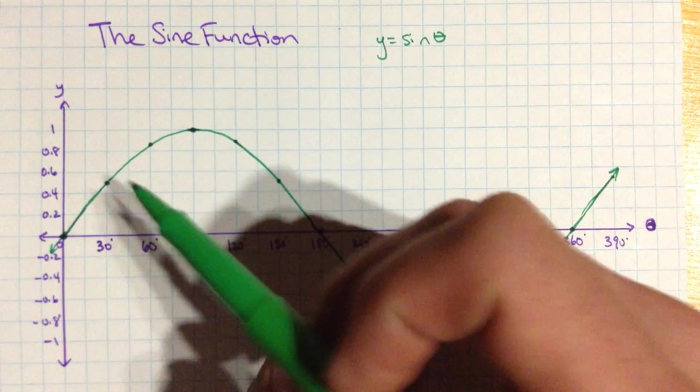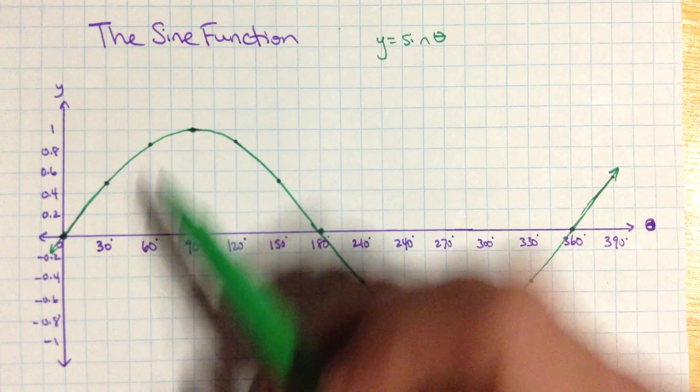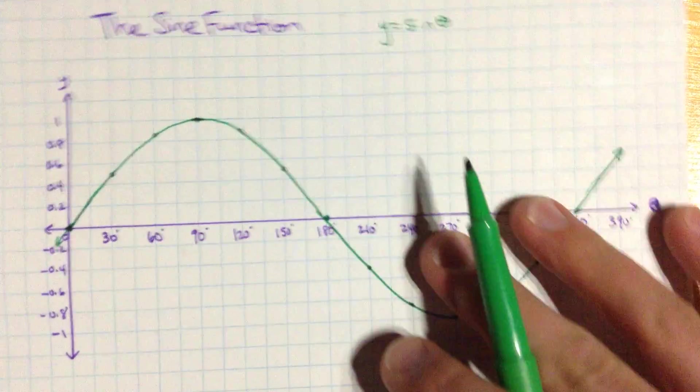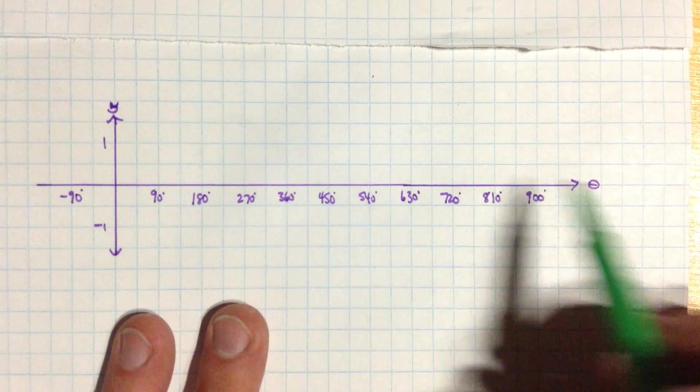And so, once again, amplitude 1, period 360 degrees. The midline is at 0. Maximum is 1. Minimum is negative 1. That's the sine function. So what does this look like, then, if we extend it further?